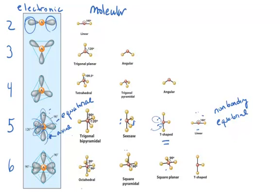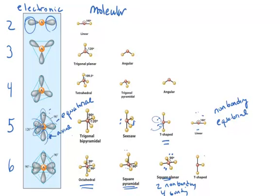For the octahedral, if all six regions of high electron density contain bound atoms, then the molecular geometry is also called octahedral. In the case of one non-bonding pair of electrons, it's going to occupy any one of the spots — it doesn't matter — and you're going to be left with square pyramidal. In the case of two non-bonding pairs of electrons and four bonding pairs of electrons for the octahedral electronic geometry, the two non-bonding pairs of electrons are going to occupy positions as far apart in space as possible — 180 degrees away from each other — leaving you with what's called the square planar molecular geometry. If you have three non-bonding pairs of electrons and three bonding pairs, then you have the T-shape.